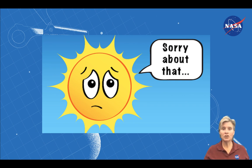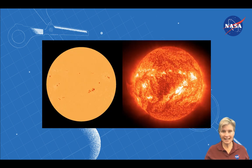We should never look directly at the sun, because it can harm our eyes. But NASA has telescopes that use special filters to look at the sun, allowing us to see some of the sun's interesting features.